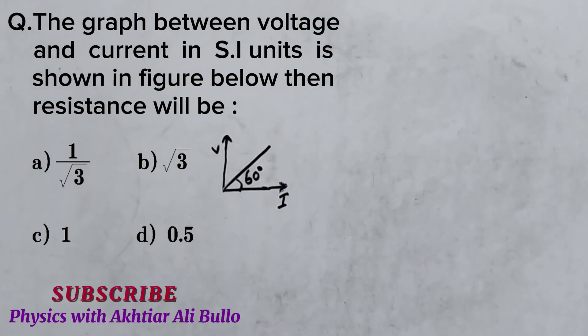The question says the graph between voltage and current in SI units is shown in the figure below, then resistance will be: a) 1 upon under root 3, b) under root 3, c) 1, d) 0.5.